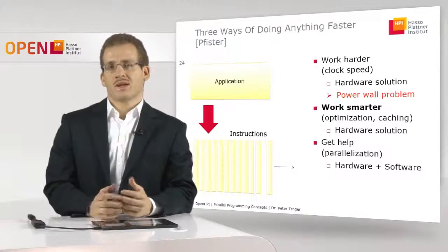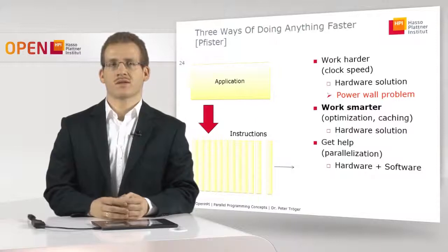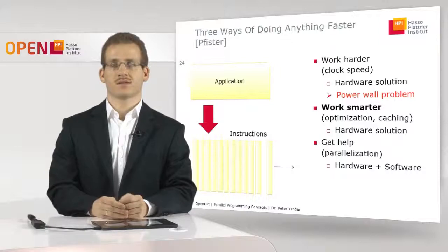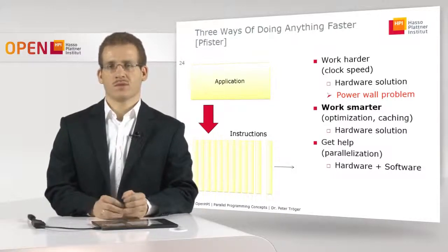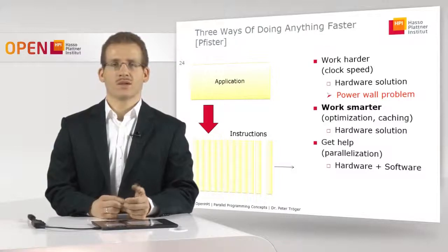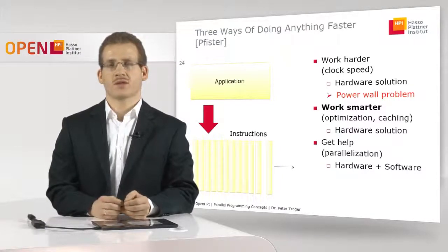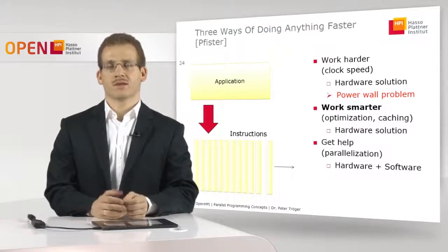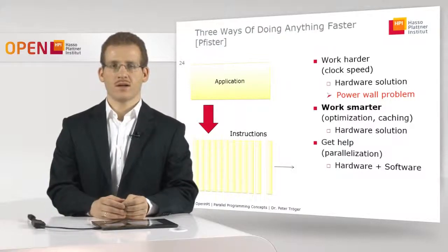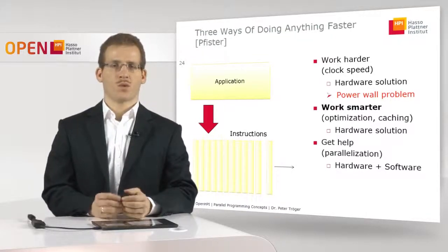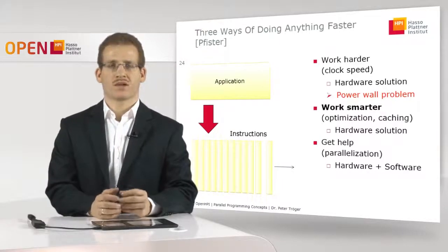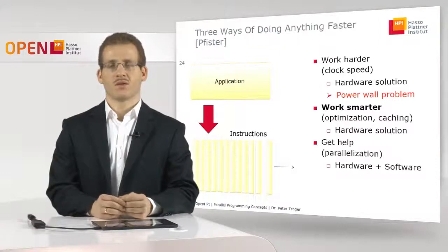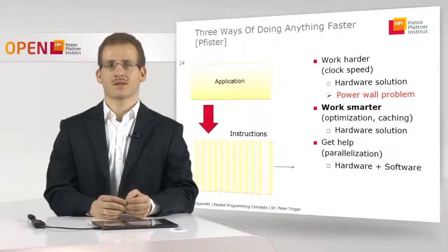We already discussed in this week and in this course that there are three ways of making software applications faster. This is a well-known concept introduced by Jeffrey Feister. The first idea is to work harder, to actually execute the instructions in the application in a faster way. The second idea would be to work smarter, to process instructions at the same speed in a smarter and more clever way in order to get an overall speedup of the application execution.